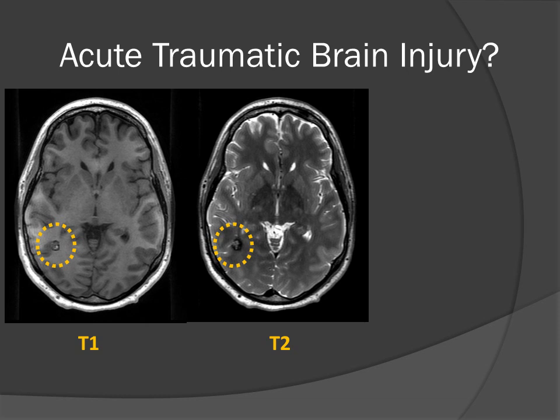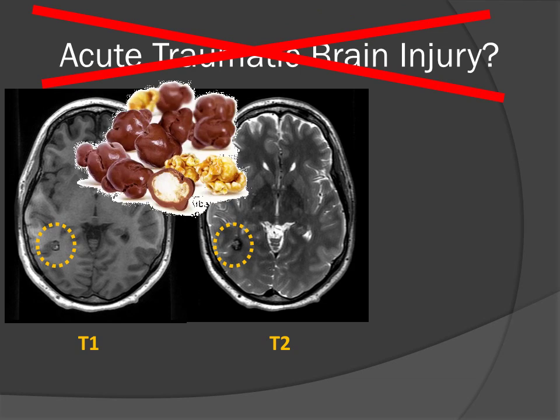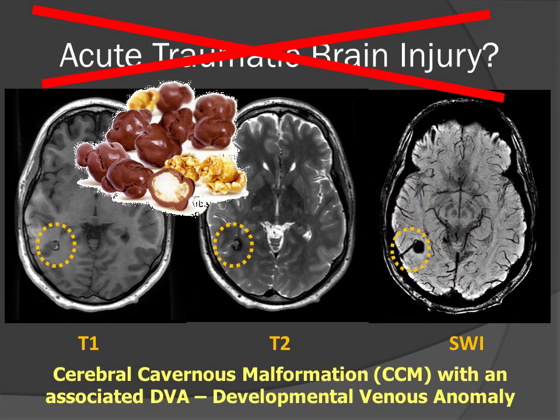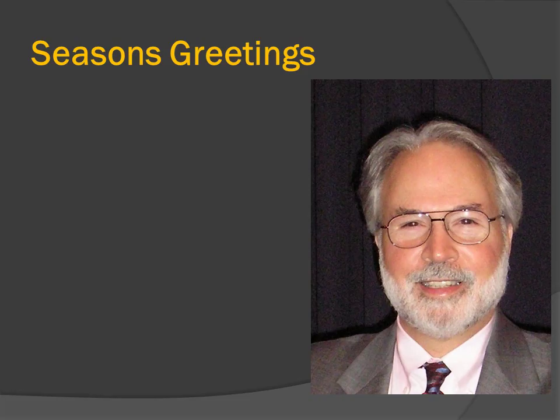We started this case with a patient suspected of having traumatic brain injury, but instead the patient had the classic popcorn lesion of a cerebral cavernous malformation, which we could prove by identifying the draining vein associated with it. When I think about the popcorn appearance for cerebral cavernous malformations, it actually looks like chocolate-covered popcorn, because the dark is on the outside and not on the inside of the lesion.